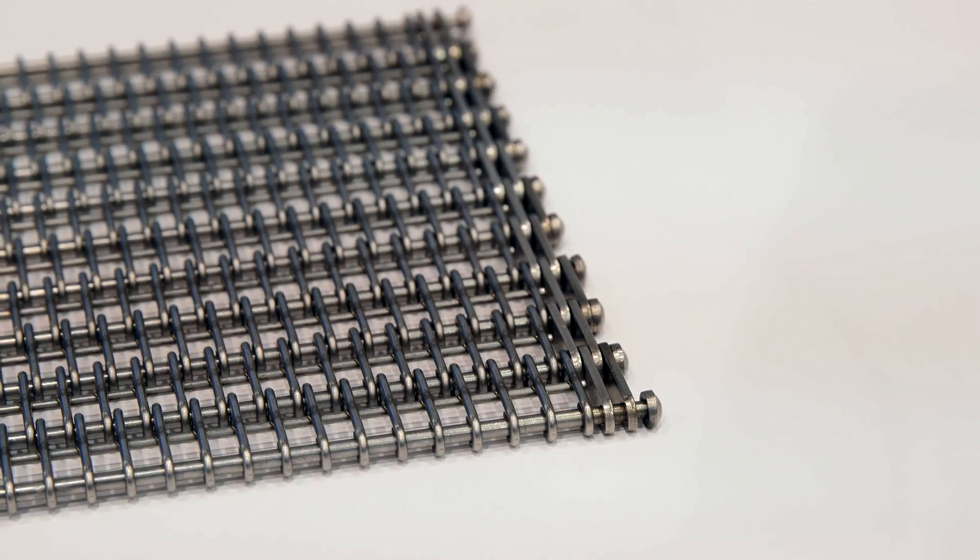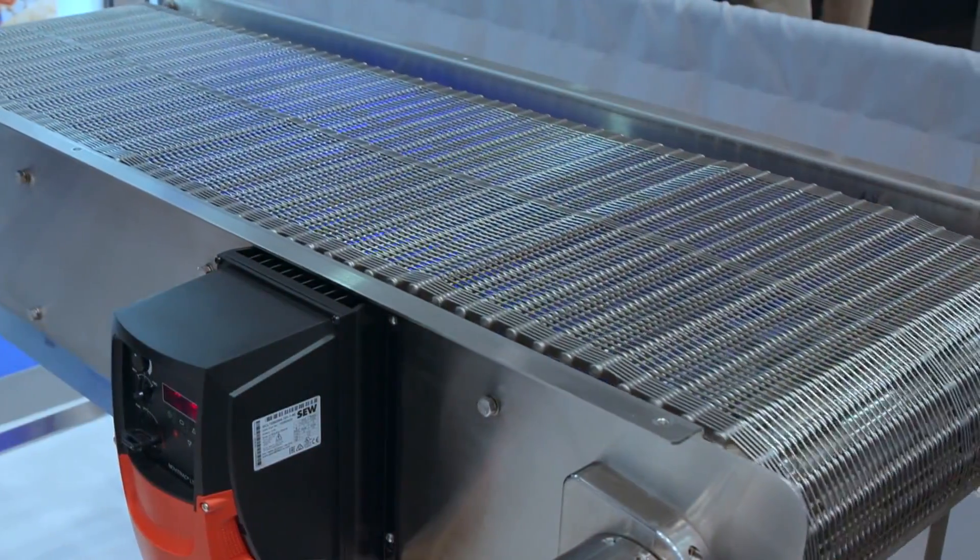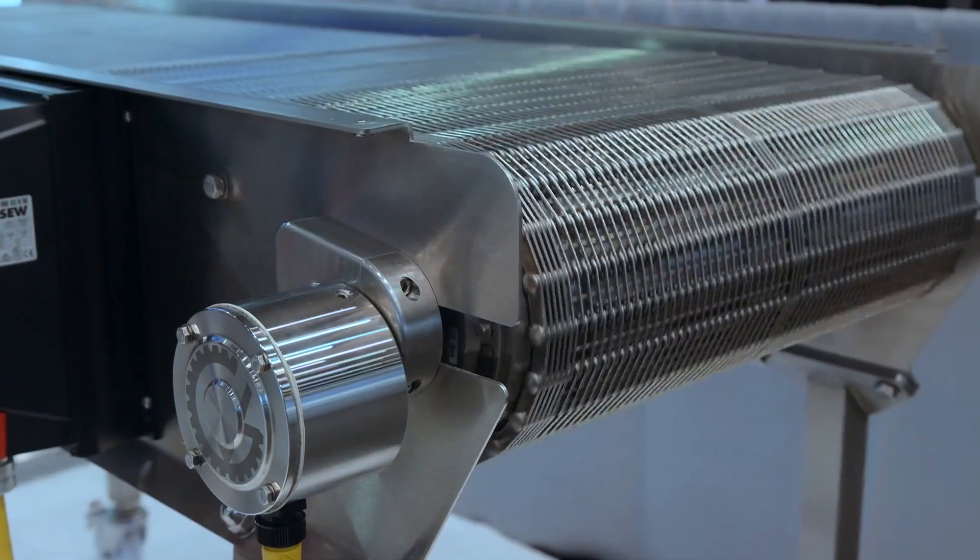The iFlex belt is a positively driven belt, which makes the belt track perfectly in your application. There are other options available for drive configurations, such as cage roller, friction drives, and chain edge.